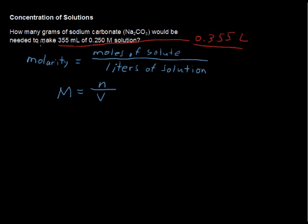Now, it asks for how many grams, but this equation doesn't find grams. So we're going to find the number of moles of the sodium carbonate that we need, and then convert that to grams. So anytime you're doing a molarity problem, you should be given two of these three things, and then you'll solve for the third.